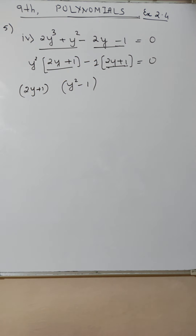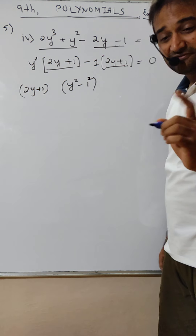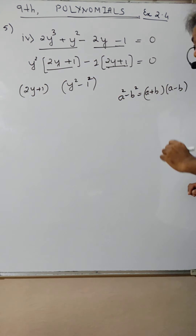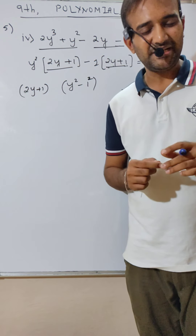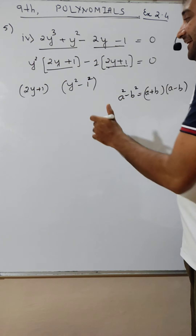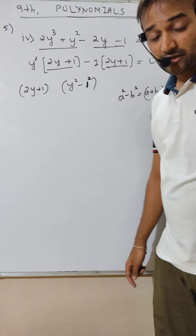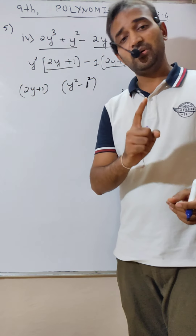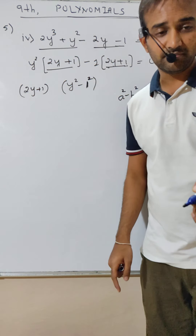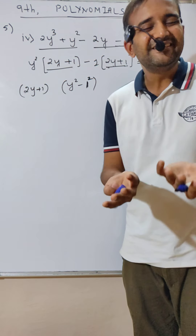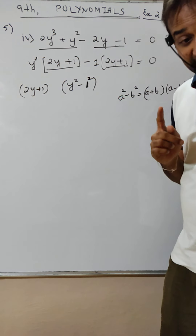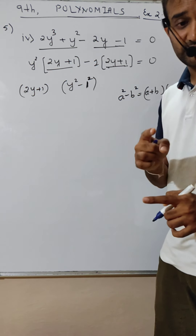Sir, minus 1 ko square dalo — very good! We write 1 as 1 squared because a square minus b square is a plus b times a minus b. Let me make my rule very clear: you can put square only when the number is 1, because it is not changing the question — 1 squared is still 1. You cannot put square to any number of your choice; that is not allowed.